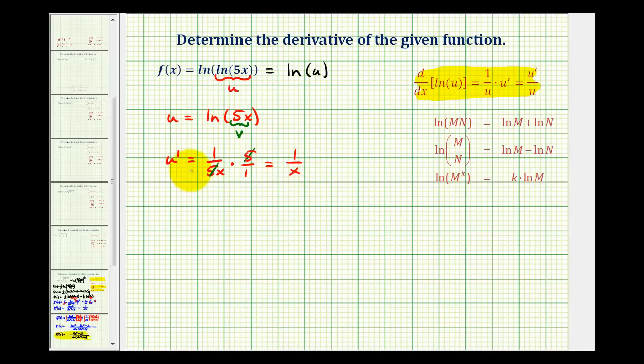So now that we have u and u prime, we can determine the derivative of natural log u with respect to x. So f prime of x is going to be equal to one over u times u prime. So we'll have one over natural log five x times u prime, and u prime is one over x.